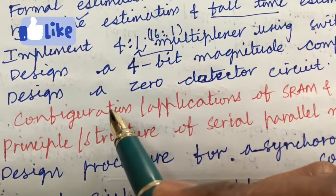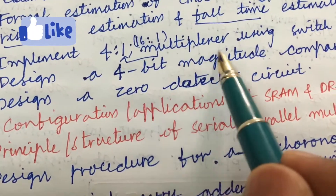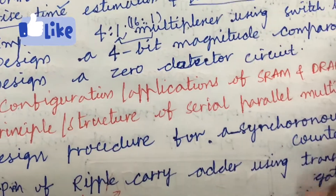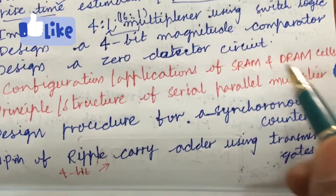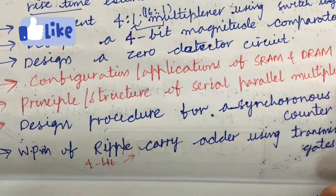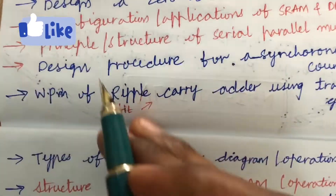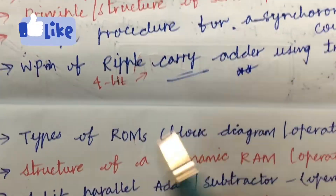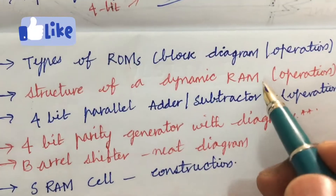Dear students, from this unit you can expect two questions for sure. Implementation of 4-to-1 and 16-to-1 multiplexer using switch logic, design of a 4-bit magnitude comparator, design of a zero detector circuit, configurations and applications of SRAM and DRAM styles, the principle and structure of serial-parallel multiplier, design procedure for an asynchronous control counter, and working principle of a ripple carry adder using transmission gates are also very very important questions. Types of ROMs with block diagrams and the structure and operation of dynamic RAM will also give you one question for sure.